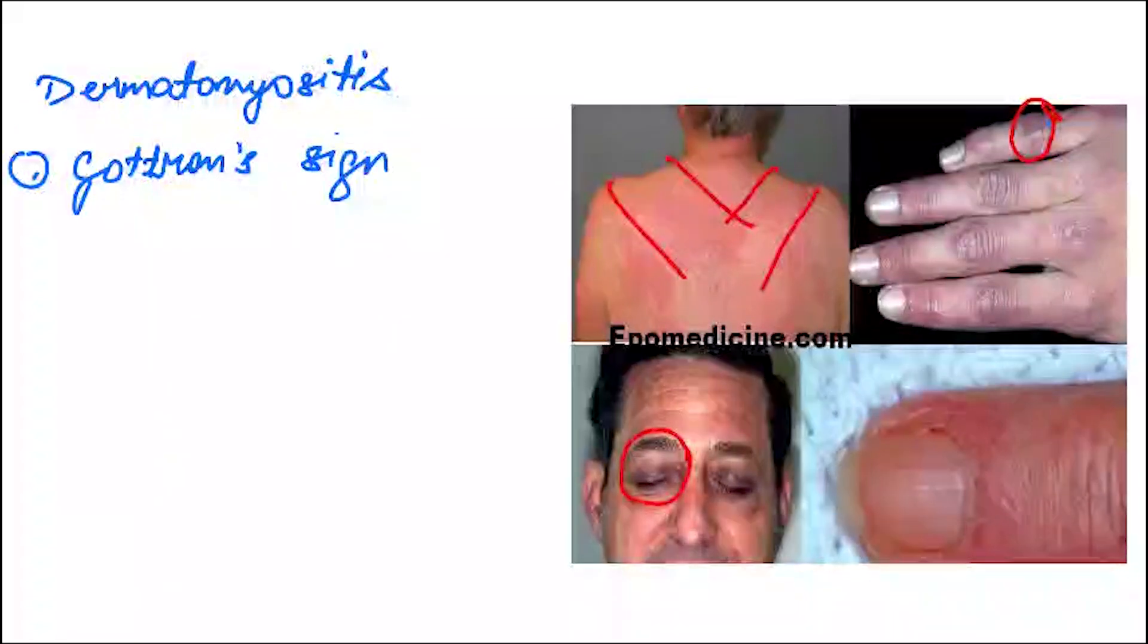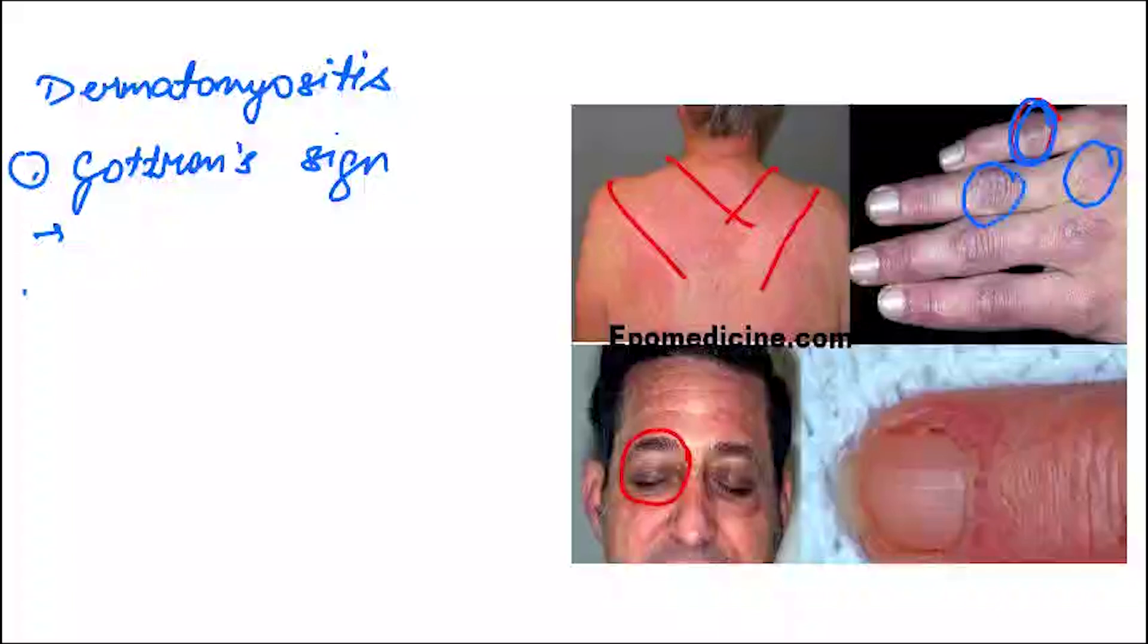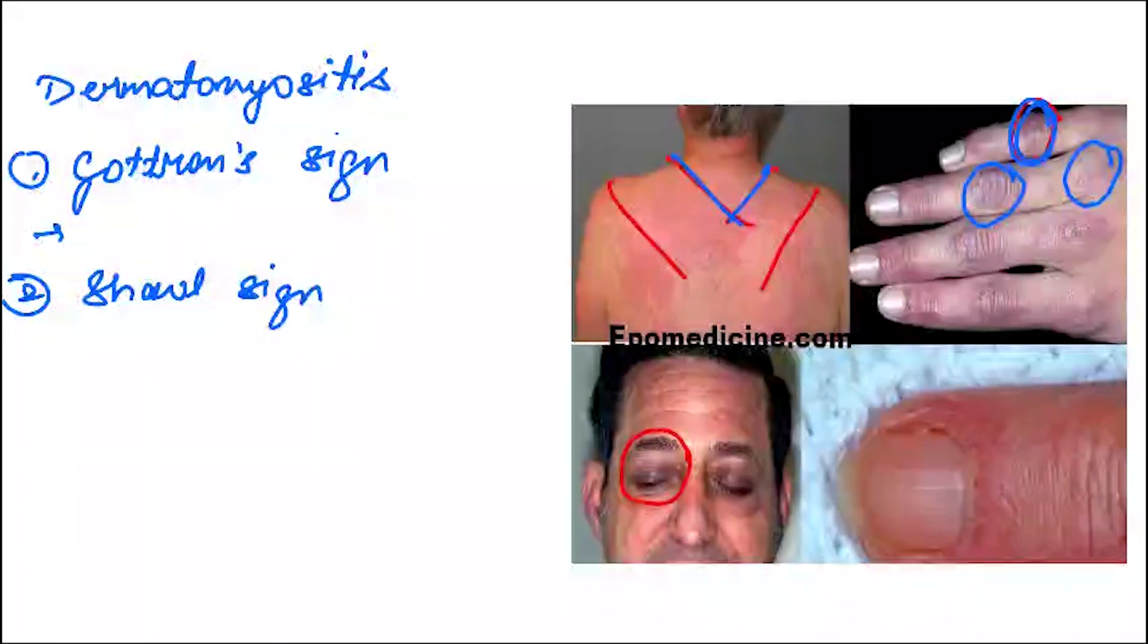What you can see is pink to violaceous erythema which are present on both the metacarpal joint as well as interphalangeal joint. Next, you can see shawl sign, which is an erythema present in the distribution of a shawl - upper back and shoulder.